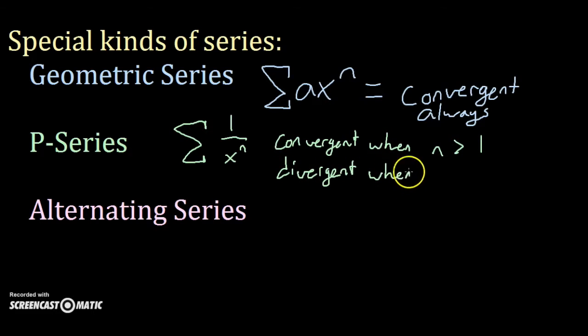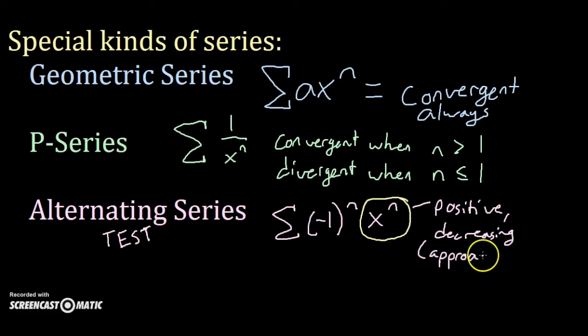An alternating series has every other term with a different sign. You know it's alternating when it has negative 1 to the n in the series. This is the first time you actually have to perform a test. Look at the non-alternating terms. If, as n increases, each non-alternating term is positive and decreasing, so approaching 0, then the series is convergent.